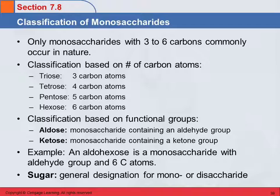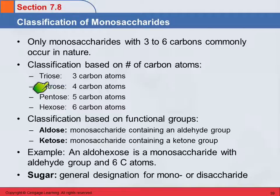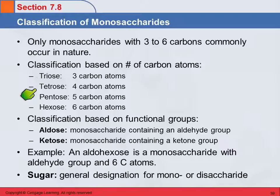We can classify monosaccharides based on the number of carbon atoms. Sugars and saccharides typically have names that end in "-ose", like glucose, lactose, and fructose. A triose has three carbon atoms, a tetrose has four, a pentose has five, and a hexose has six. Here we're using those same numerical Greek prefixes.